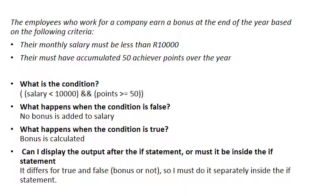This paragraph in the question is probably the most important and the most tricky — this is where you need to do problem solving in coding. The question says employees earn a bonus based on the following criteria: monthly salary must be less than 10,000, and they must have accumulated 50 achiever points over the year. There are some obvious questions to ask here.